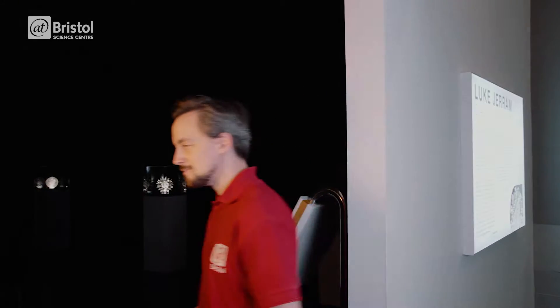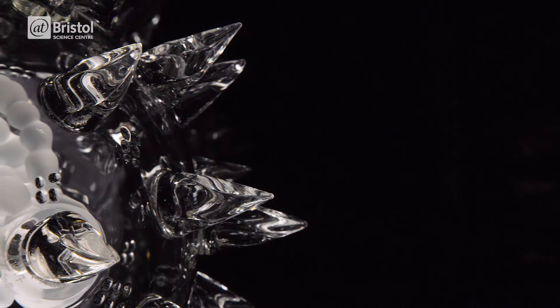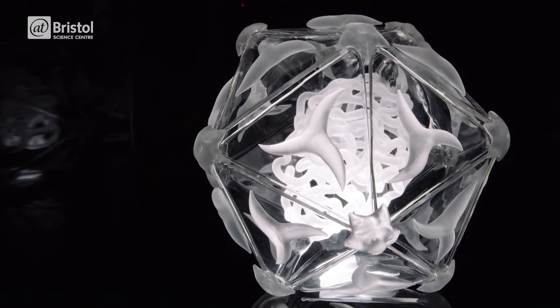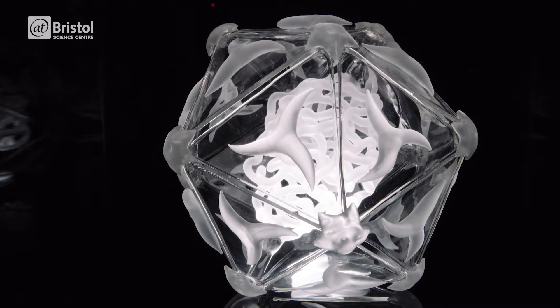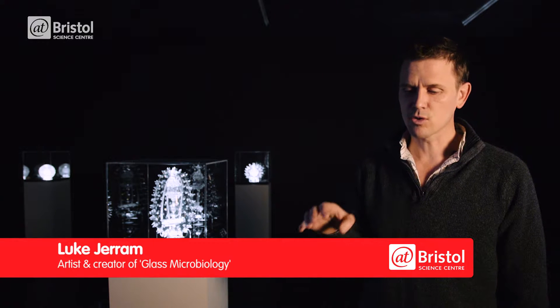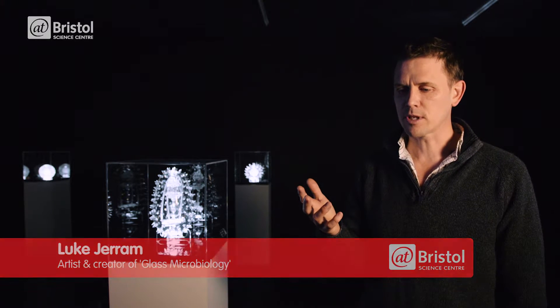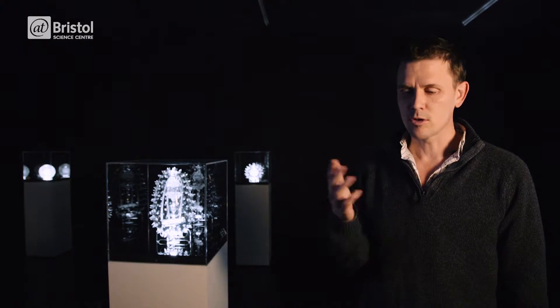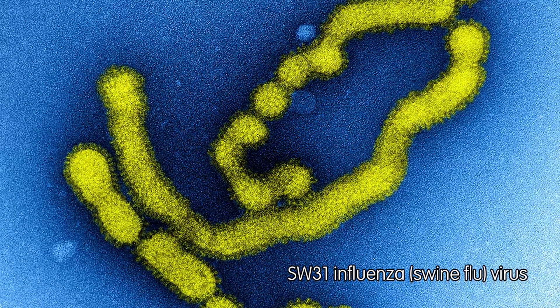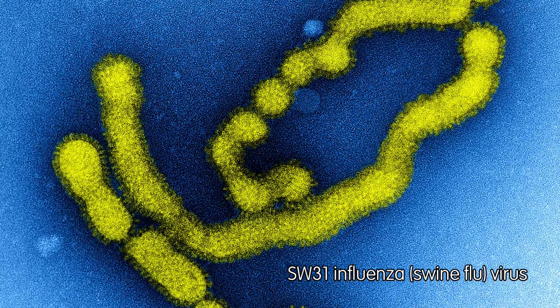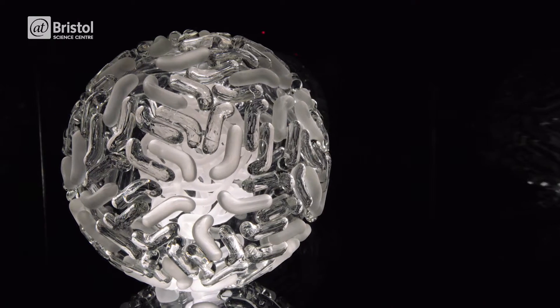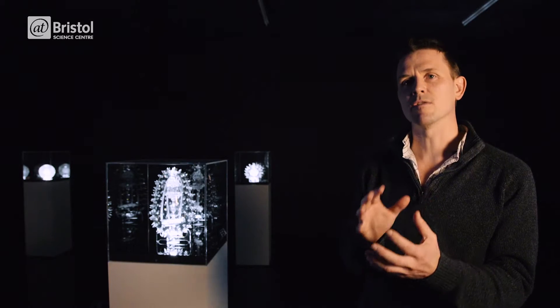So if these viruses are too small for us to see, how might we best visualise these deadly diseases? The idea for glass microbiology came from reading newspapers about the latest pandemics, and each story had a photograph of perhaps HIV or swine flu used to illustrate those stories. Those images of viruses were often brightly coloured, but viruses don't have any colour — they're smaller than the wavelength of light itself. So I wanted to make these colourless three-dimensional objects to represent a virus.